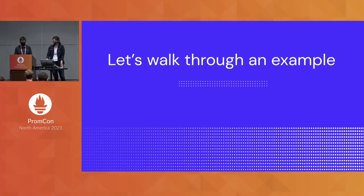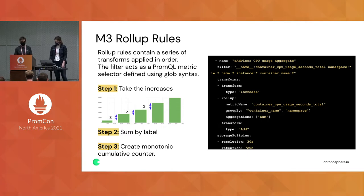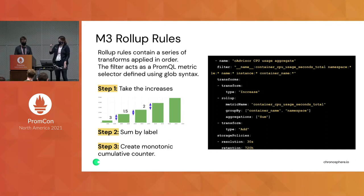Going through an example of a roll-up rule and how you would implement it — roll-up rules are just a series of transforms done in order. There are three main steps. You can see in the configuration the roll-up rule name and a filter. The first step is to take the increases or deltas between each of our monotonic counters — measuring the little increments between each counter.